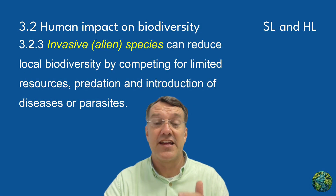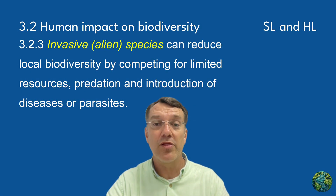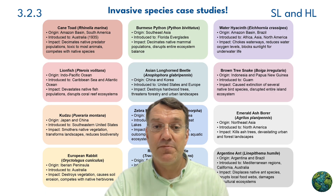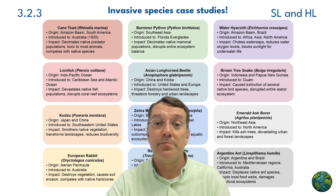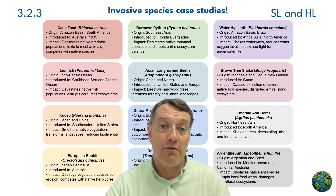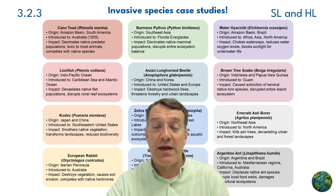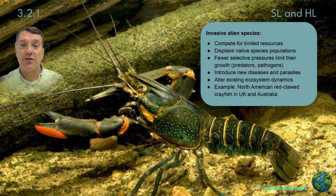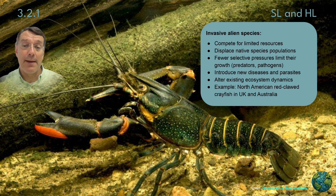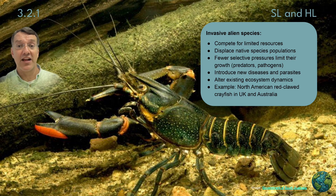Invasive alien species can alter existing ecosystem dynamics by completely transforming habitats and driving native species towards extinction. Invasive species reduce local biodiversity by outcompeting native species for limited resources. Without natural predators or pathogens to limit their growth, invasive populations can expand rapidly. For example, the North American red-clawed crayfish has invaded waterways in the UK and Australia, displacing native crayfish species. Invasive species can also introduce new diseases and parasites that native species haven't evolved defenses against, causing native populations to decline.